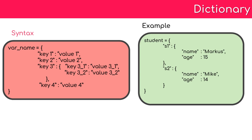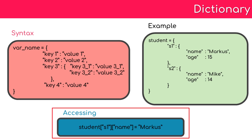Here is a simple example of a nested dictionary. We have an outer variable named student. Within student we have two sub-dictionary items, S1 and S2, each with keys called name and age. To access the name from S1, you first access the S1 key of the student variable and then access the inner key name from S1, as highlighted here.